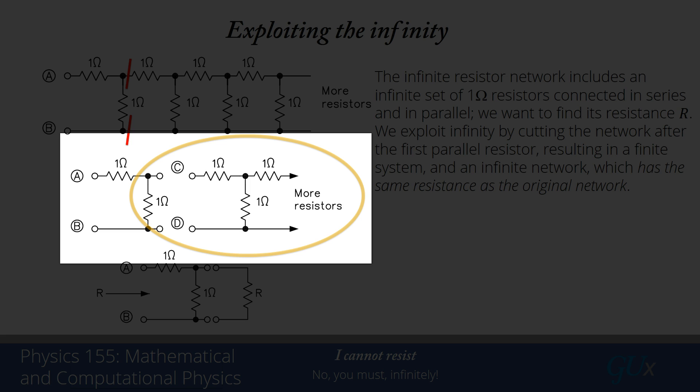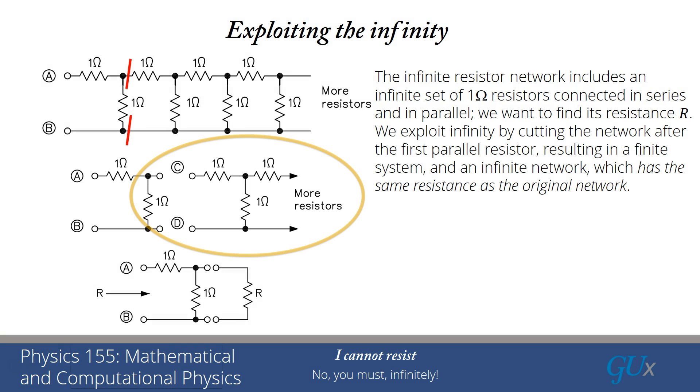We've separated into these two parts, this finite part on the left and the circled region on the right. That circled region has the exact same resistance as the original effective network, so we'll call that resistance simply R.